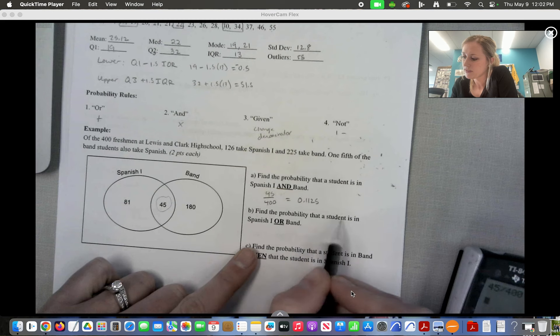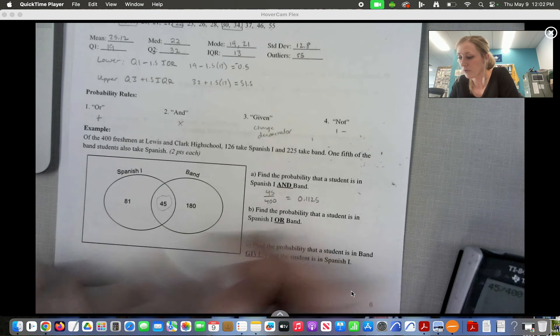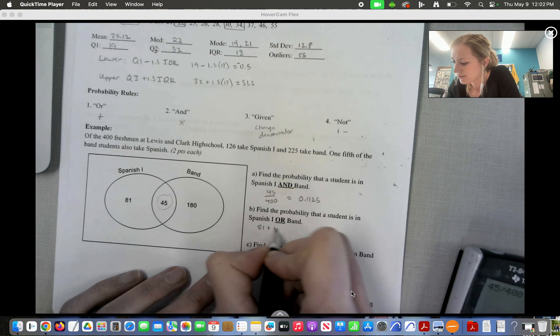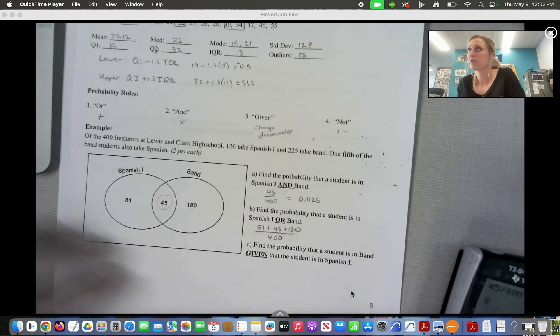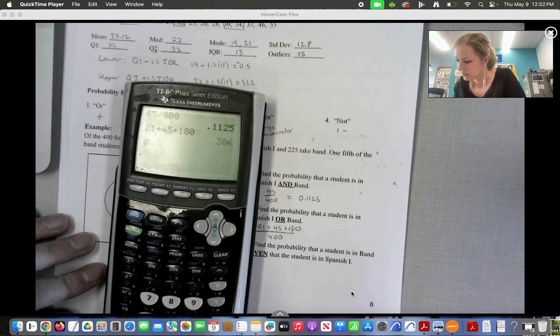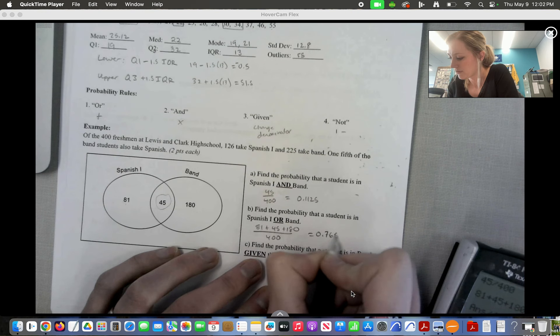If they're in the probability that a student is in Spanish or Band, this could be Spanish, Band, or both. So we're going to add these over our total. So we've got 81 plus 45 plus 180 divided by 400. So we get 0.765.